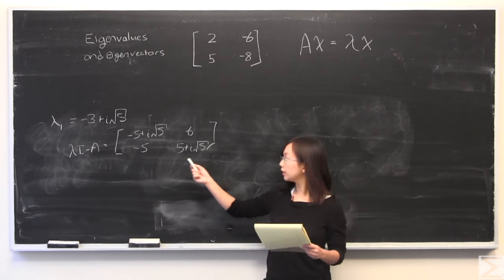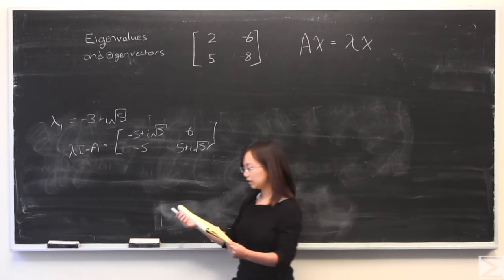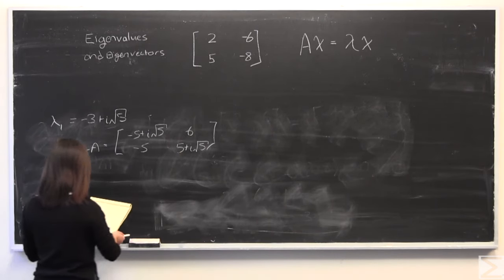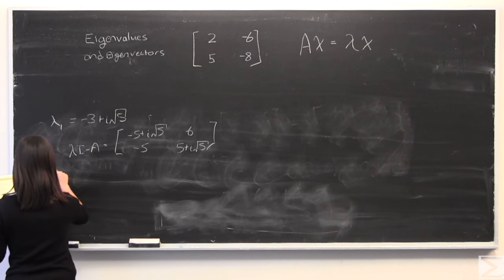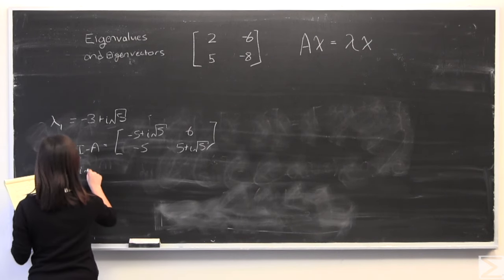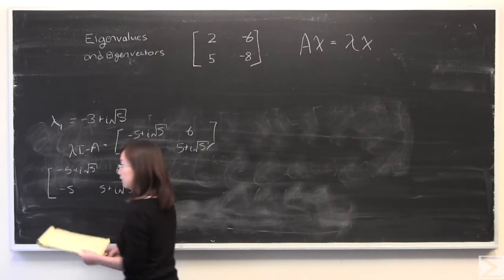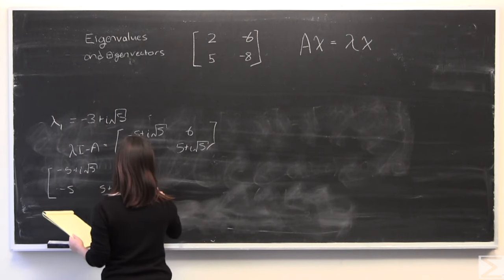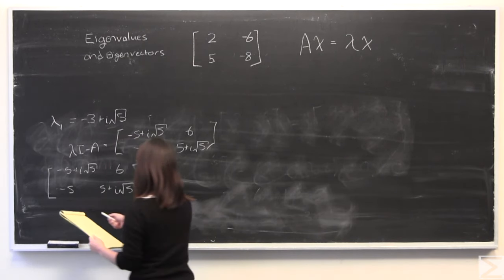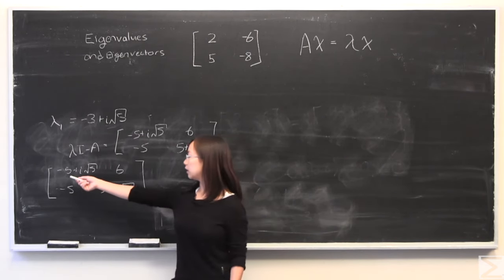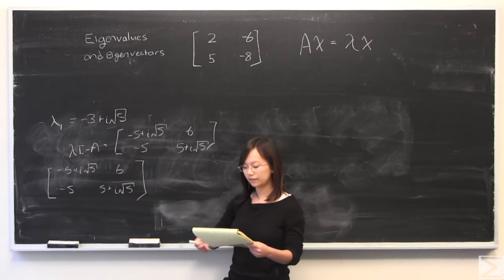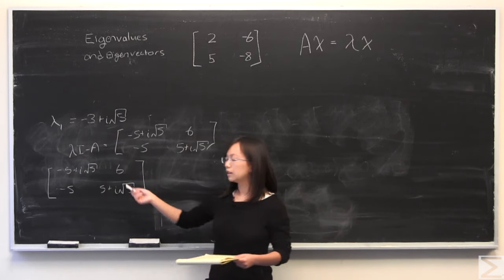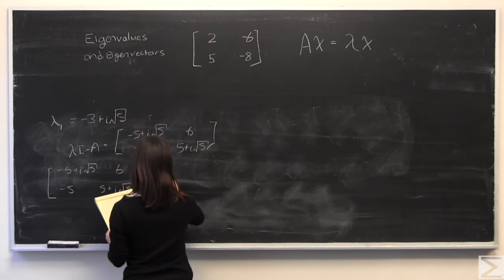Okay, so I've started by plugging in the values for lambda 1. We are going to put this in row echelon form, which is a necessary step. So we'll start by writing it again over here. So if you've studied matrices, you know I can multiply rows by certain things. I'm going to start by multiplying this bottom row by negative 5 plus i square root of 5 divided by negative 5. And what that would do is that's going to turn this into negative 5 plus i square root of 5, which is what we need.